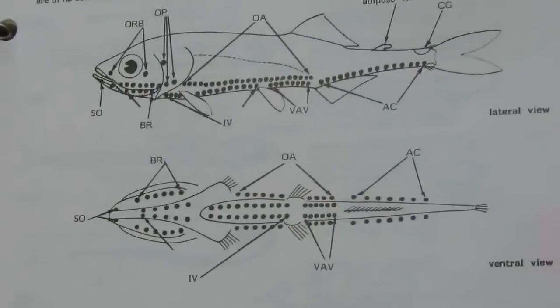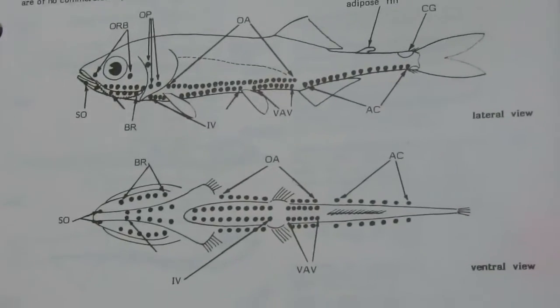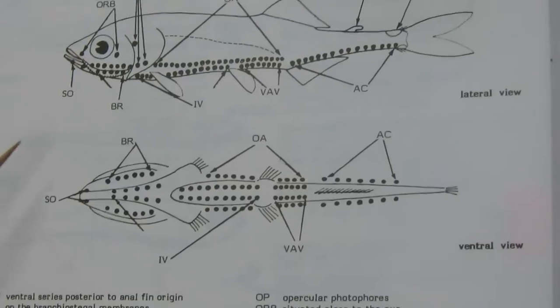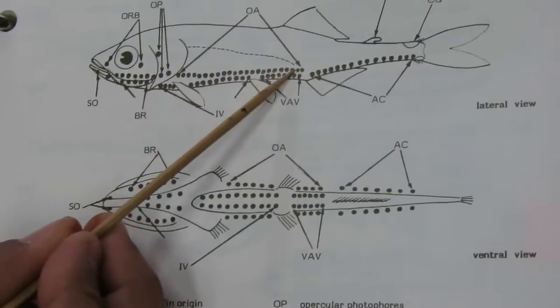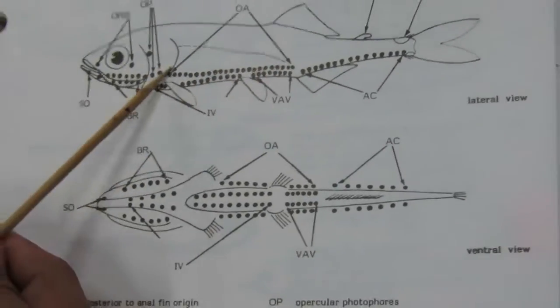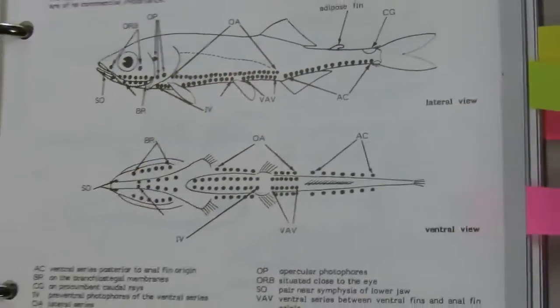Next is Gonostomatidae — the bristlemouth. The lateral line area has a row of small photophores. You can find photophores along the lateral line.